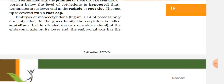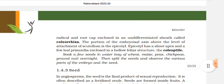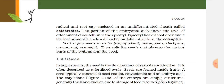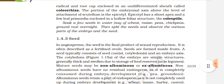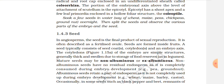Embryos of monocotyledons possess only one cotyledon. In the grass family, the cotyledon is called scutellum, situated towards one side (lateral) of the embryonal axis. At its lower end, the embryonal axis has the radicle and root cap enclosed in an undifferentiated sheath called the coleorhiza. The portion of the embryonal axis above the level of attachment of the scutellum is the epicotyl, which has a shoot apex and a few leaf primordia enclosed in a hollow foliar structure called the coleoptile.